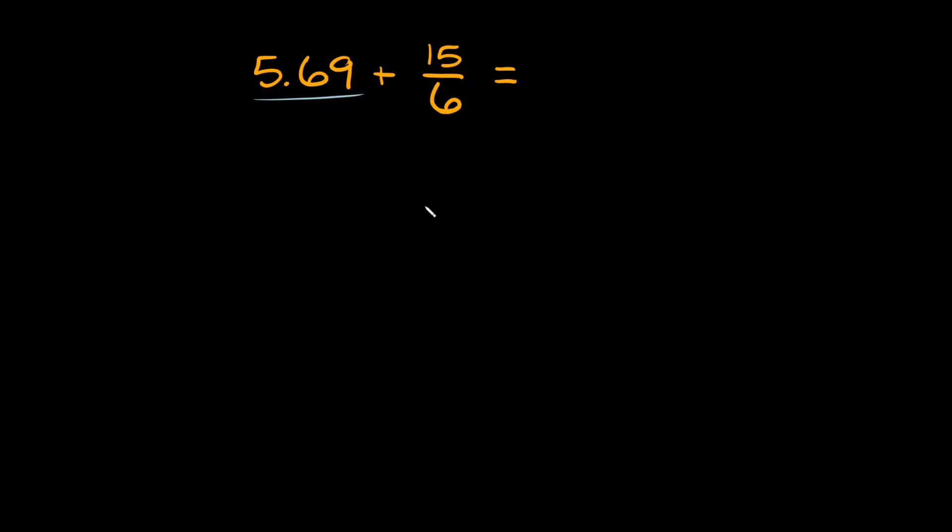So how do you turn a fraction into a decimal? Well, remember, fractions are the same thing as division problems, right? So, 15 over 6, that's the same thing as 15 divided by 6. Or in other words, I can write it like this: 15 divided by 6. So let's solve this division problem.